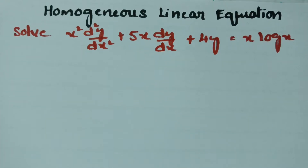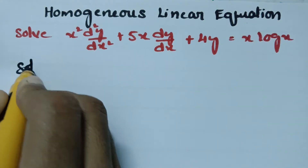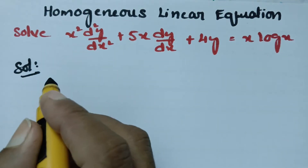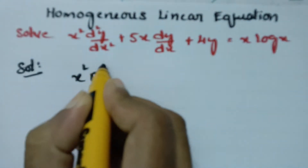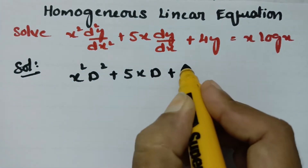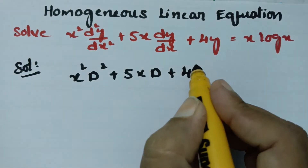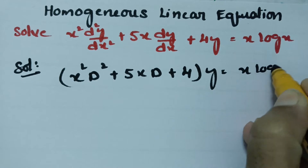The problem is to solve x squared d squared y by dx squared plus 5x times dy by dx plus 4y equals x times log x. The given equation in operator form can be written as (x squared D squared plus 5xD plus 4) of y equals x log x.